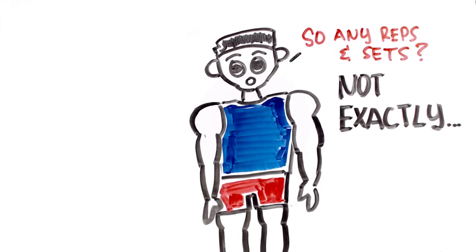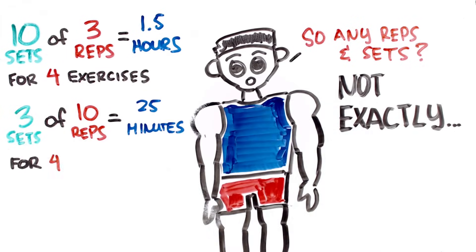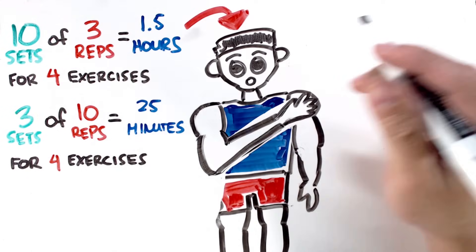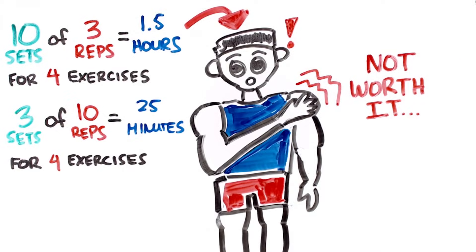Well, not exactly. If you were to do 10 sets of 3 reps per exercise, you're looking at well over an hour and a half just to complete 4 different exercises. That's not exactly convenient for most people. Performing 3 sets of 10 reps, however, takes about 25 minutes to complete the same 4 exercises. It's also important to know that the 3 reps from the 10 sets are going to be pretty heavy, which can also increase chances of you hurting yourself. The risk might not be worth not only the reward, but also your time.